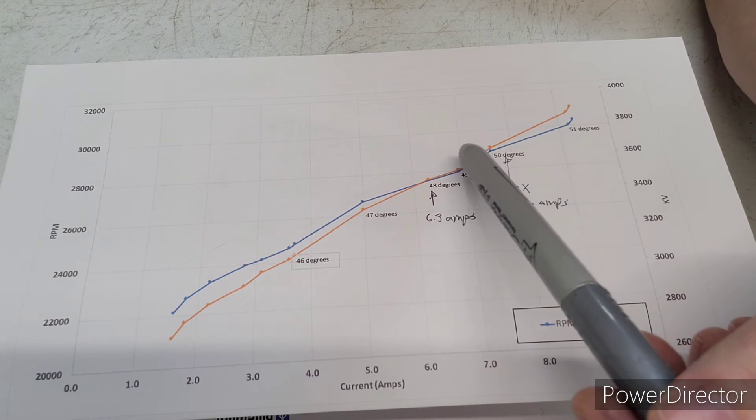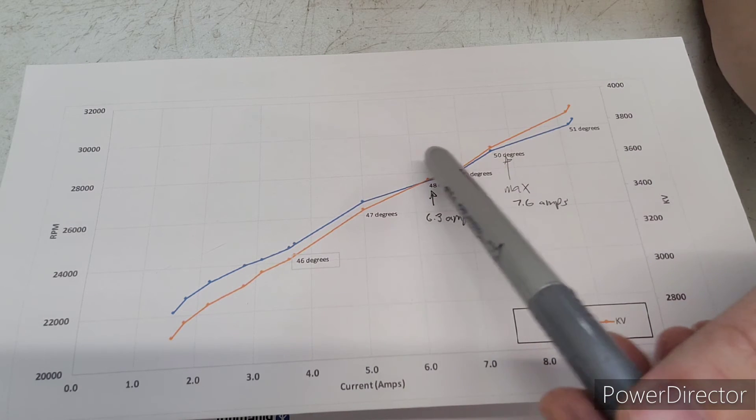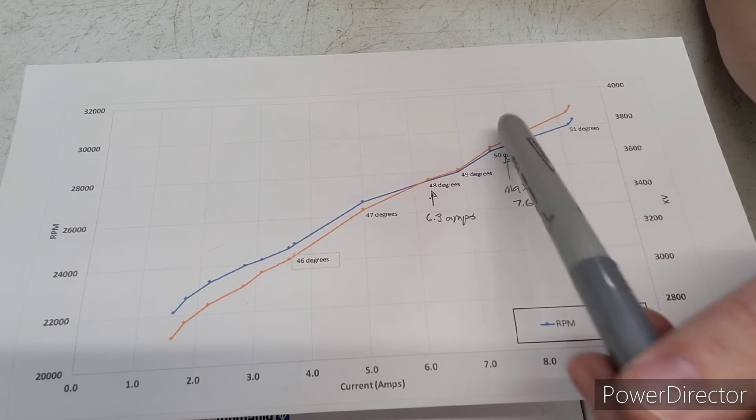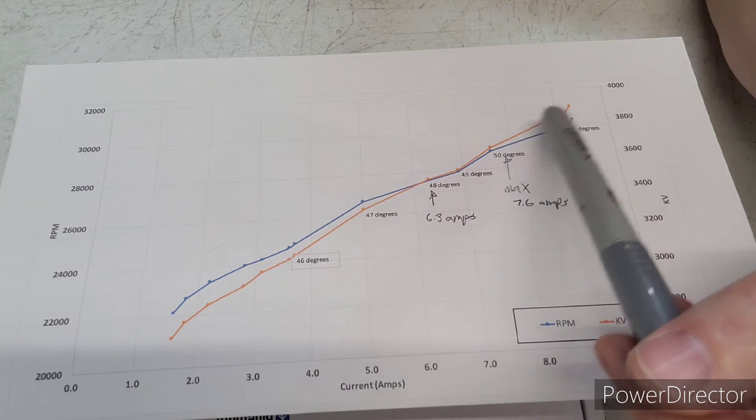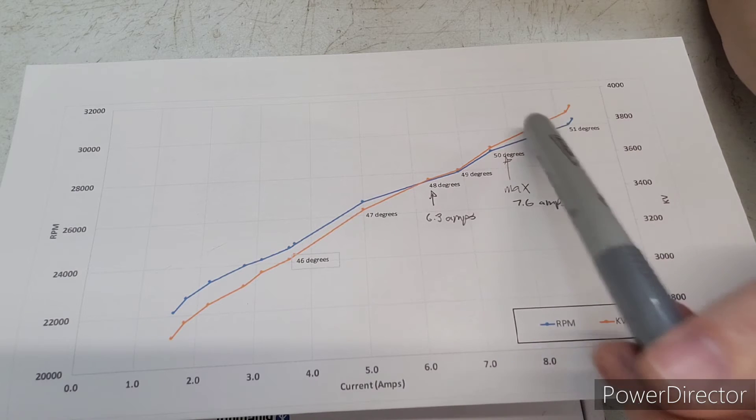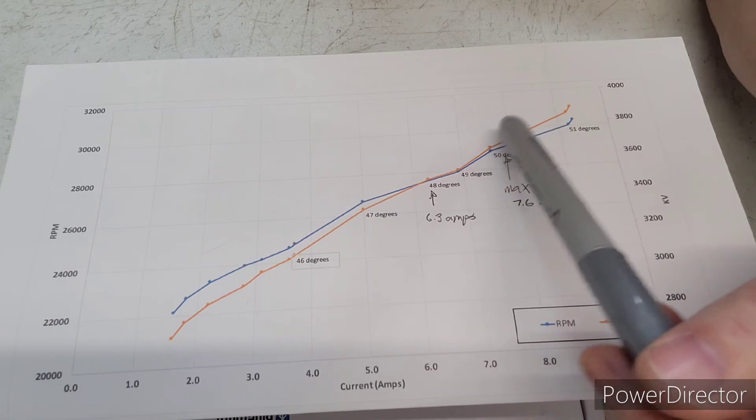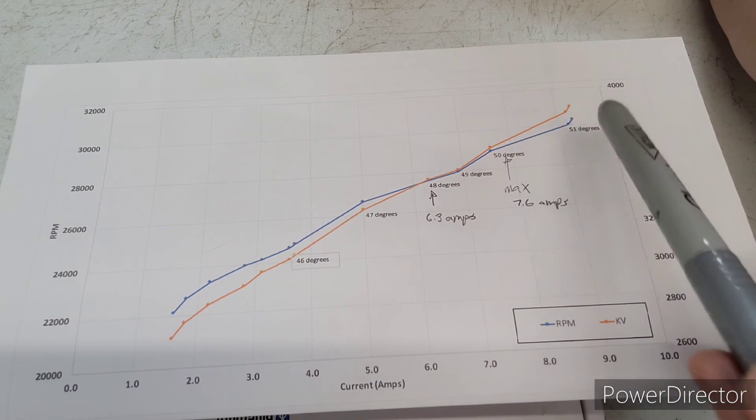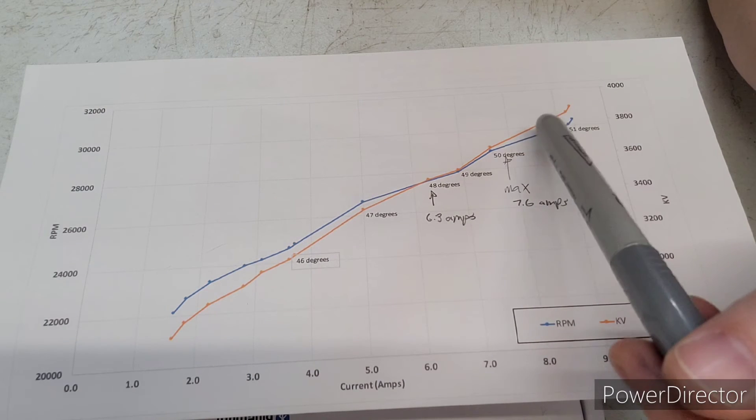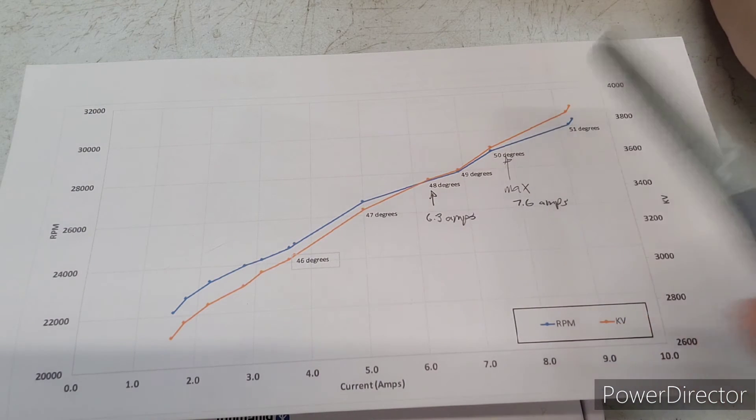And then smaller jumps, less than an amp here, less than an amp here. And then another gigantic leap. In fact, this was close to a two amp jump and pretty minimal KV gain.